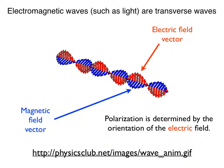As it turns out, electromagnetic waves such as radio waves, infrared, visible light, ultraviolet light, and x-rays are transverse waves. Therefore electromagnetic waves are polarized.